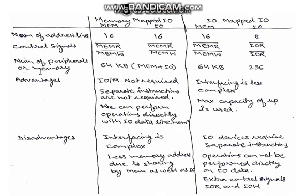Number of peripherals or memory which can be connected in memory mapped I/O, considering 8085, are 64 kilobyte memory plus I/O both. It means we can address only 64 kilobyte memory including I/O devices and memory. Whereas in I/O mapped I/O, we can address 64 kilobyte memory separately and 256 byte memory for I/O.